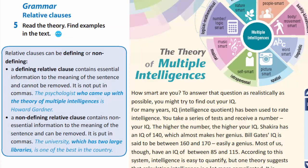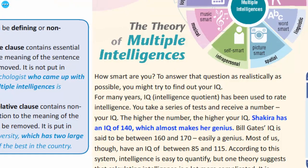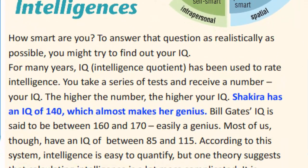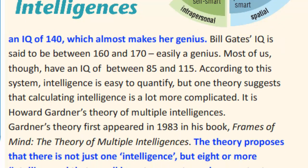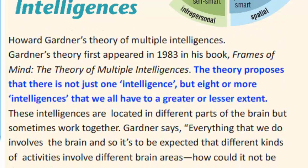And now, in exercise 5, you are to find examples in the text. Let's check. Shakira has an IQ of 140, which almost makes her genius. It's a non-defining relative clause.